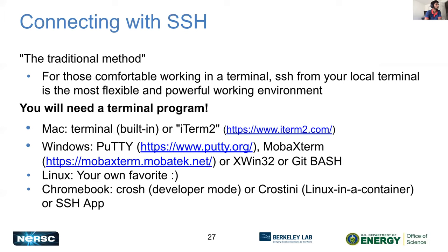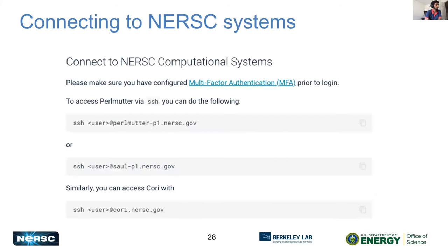Next, we'll talk about how you connect to NERSC systems. The first method is SSH — the most common way of accessing NERSC. You need to be familiar with the terminal. If you have a Mac, it's already built in, or you can get iTerm2. For Windows, you may want to download something like PuTTY or MobaXterm. Linux also has a built-in terminal. To SSH in, you do: ssh username@perlmutter-p1.nersc.gov. That's how you access Perlmutter. For Cori it's cori.nersc.gov.